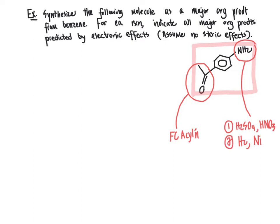We have three reactions to do: Friedel-Crafts acylation, nitration, and reduction of the nitro group. We have to carry these out in an order that creates the intended major organic product. If we did Friedel-Crafts acylation first, the carbonyl group directly attached to the aromatic ring is a meta-director, so a group attached afterward would end up at the meta-position. That tells us we don't want to do acylation first because we're trying to make a para-product.